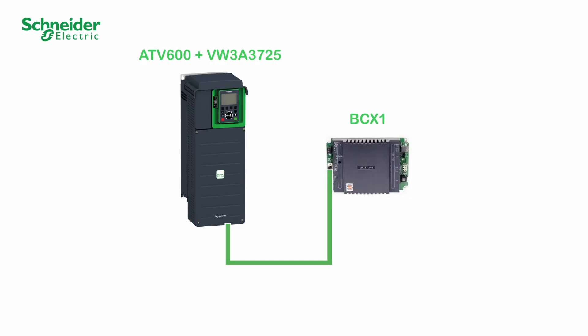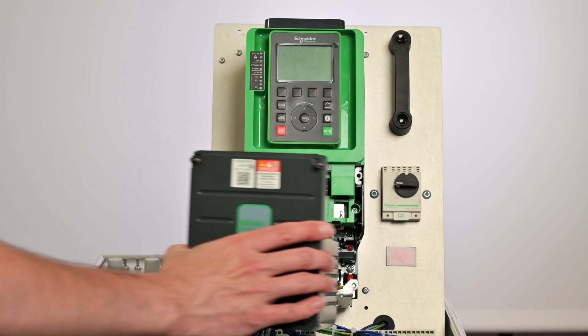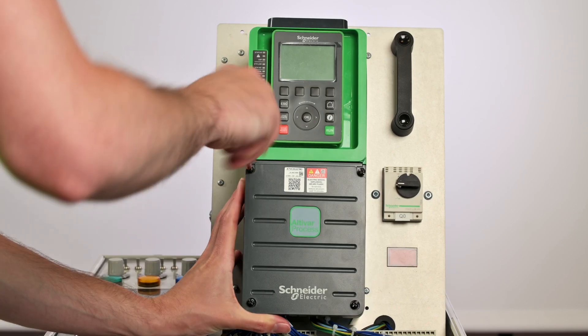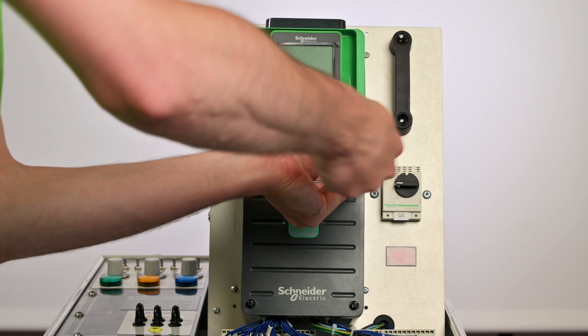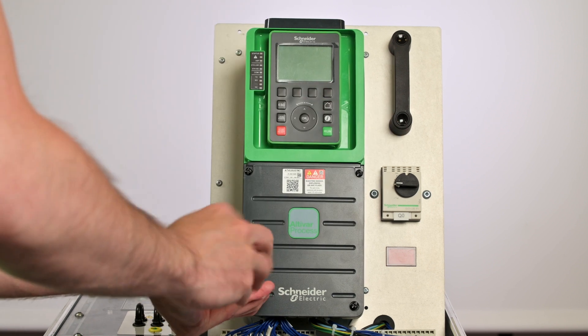To connect the controller to the ATV600 via the BACnet option module, refer to the ATV600 BACnet manual. Step 7: put the cover back and tighten the four captive screws.